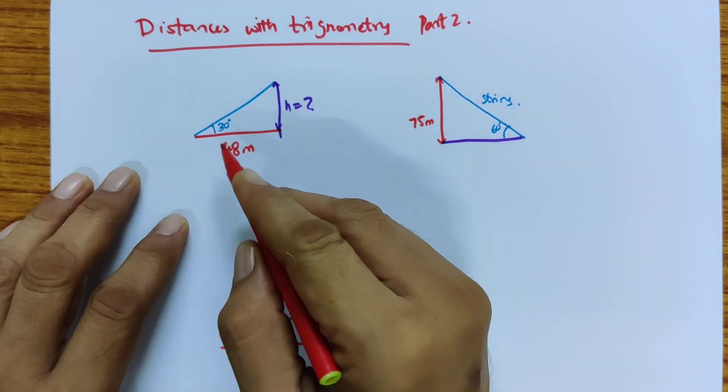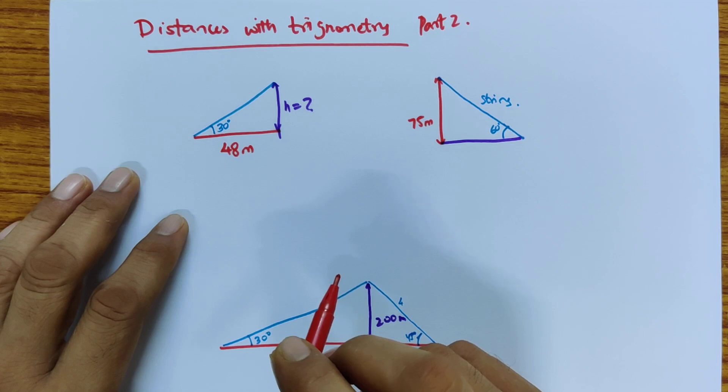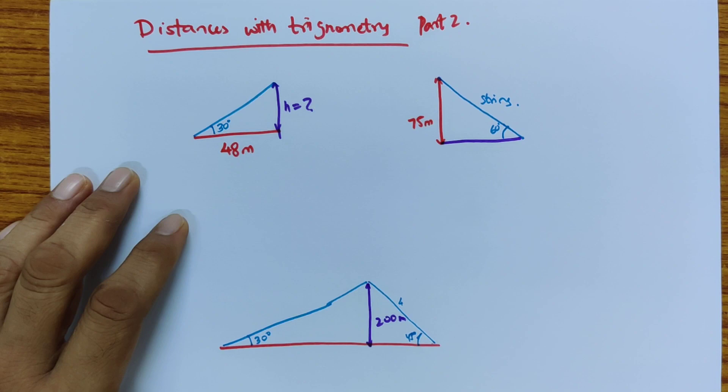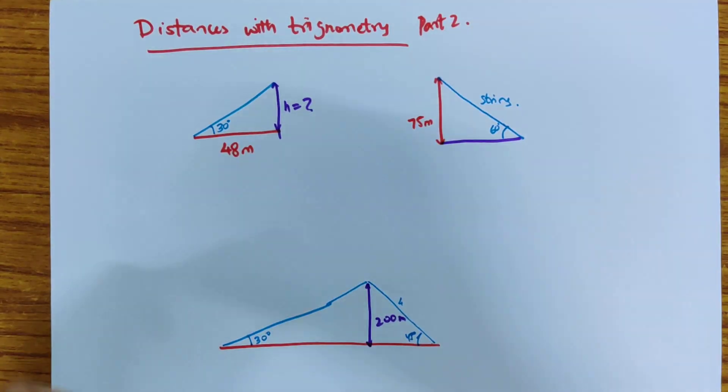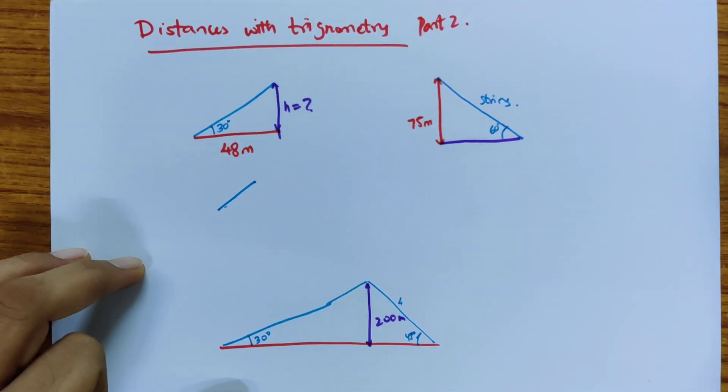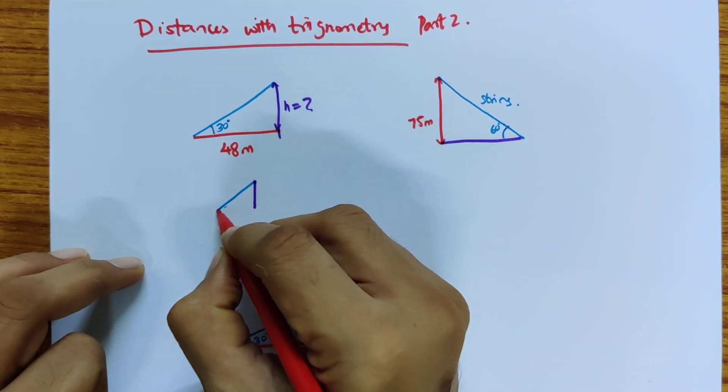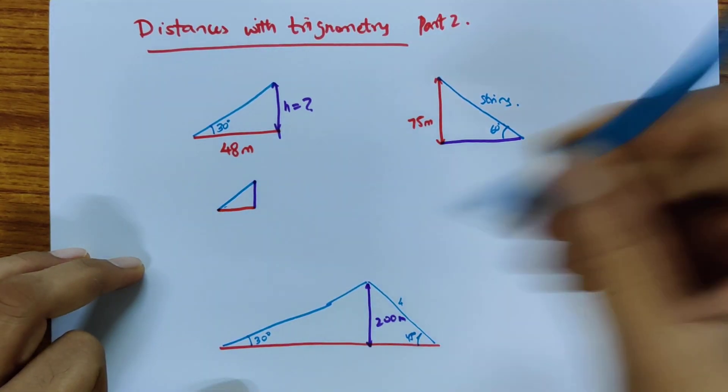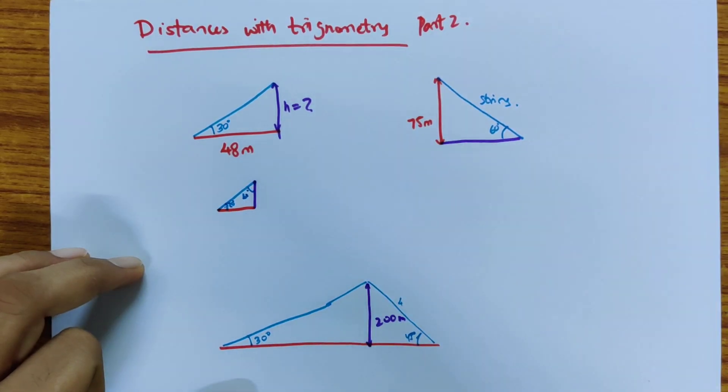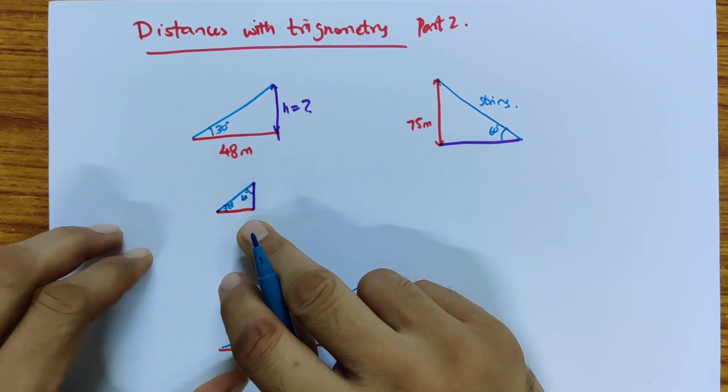So this is a 30 degree triangle, half of an equilateral triangle, but the smaller angle is here. Let's draw it that way. So I have 30 degrees, smaller side here, smaller angle there. This is 30, this is 60. This is the 1 to root 3.